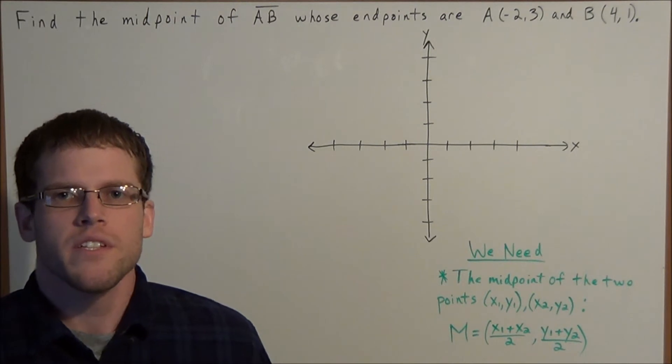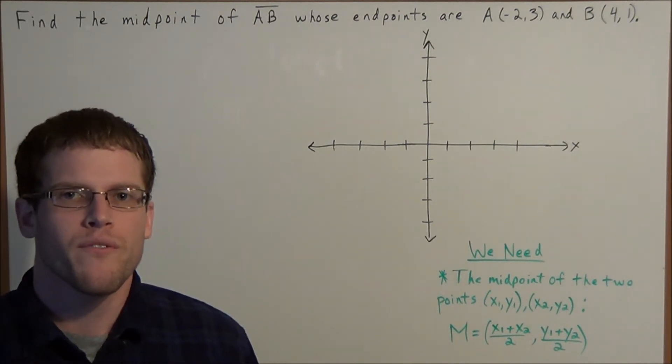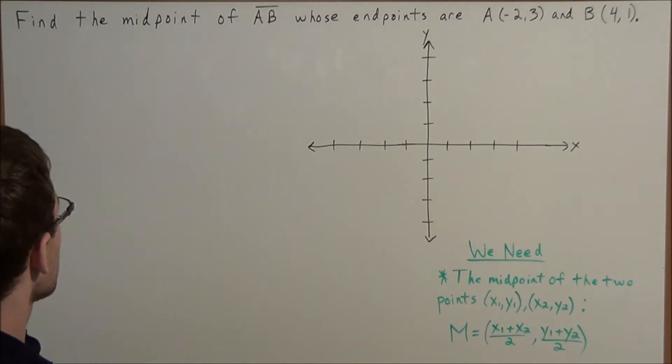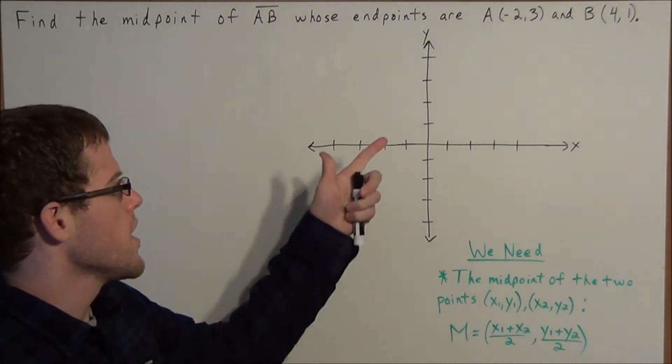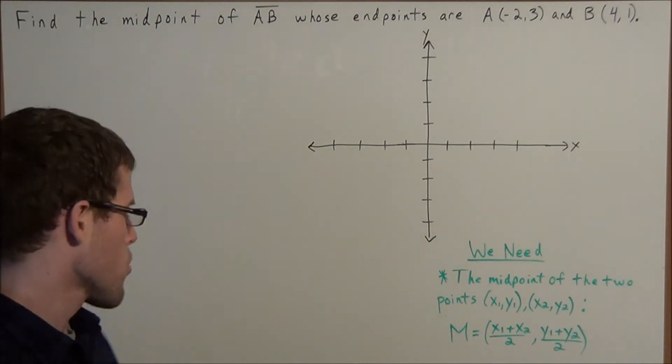Hello YouTube students, my name is Vincent and today I want to take a look at the midpoint formula. I want to look at the problem: find the midpoint of line segment AB whose endpoints are (-2, 3) and (4, 1).